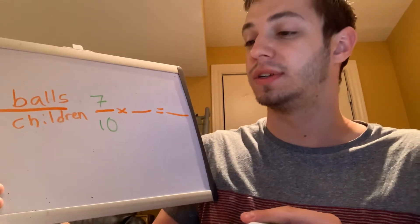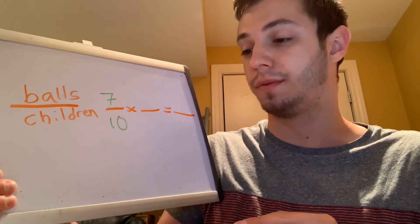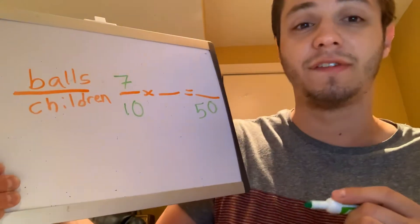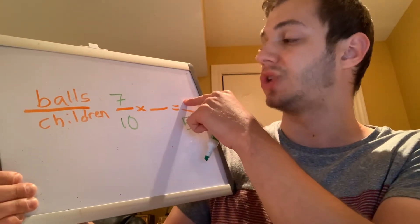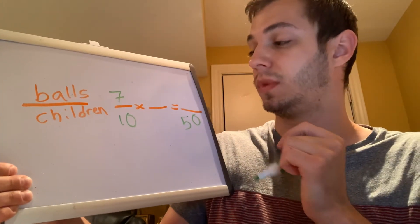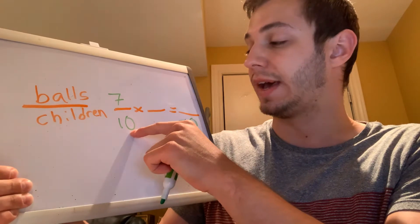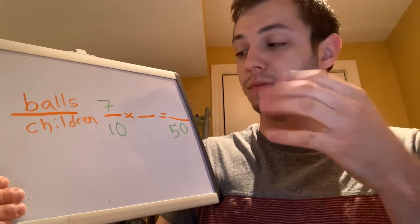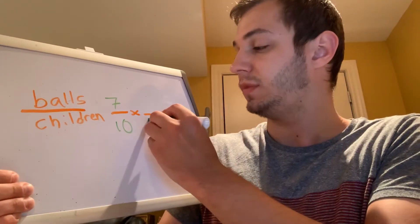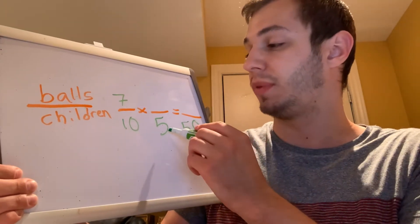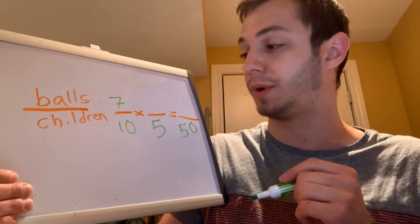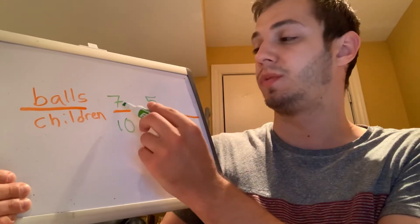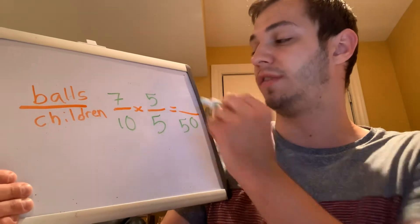It tells us if there are 50 children, how many balls are there? All we know is that there are 50 children, so we have to figure out what we're multiplying by and our missing top number in our last fraction. We have to first figure out: 10 multiplied by what number will give us 50? Counting by tens: 10, 20, 30, 40, 50 — so it's going to be five. Since these are equivalent fractions, I multiply my bottom number and my top number by the same number, so my top number will also be five. Now I just multiply seven by five, which gives us 35.